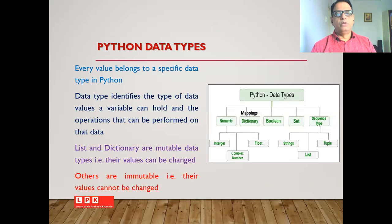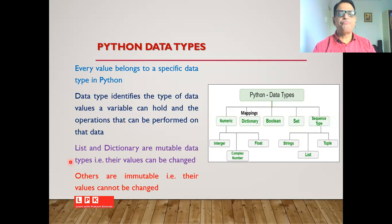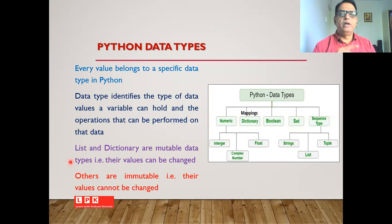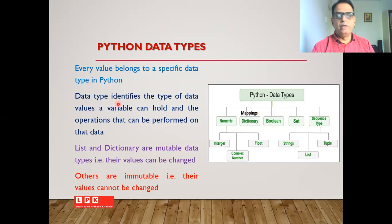Let us start the session with the question: what are the different data types available in the Python programming language? In real life one can easily find that there are different data values and we need to deal with them. In programming languages there must be some provision to deal with different data values, and this provision is called a data type. Every value belongs to a specific data type in Python.